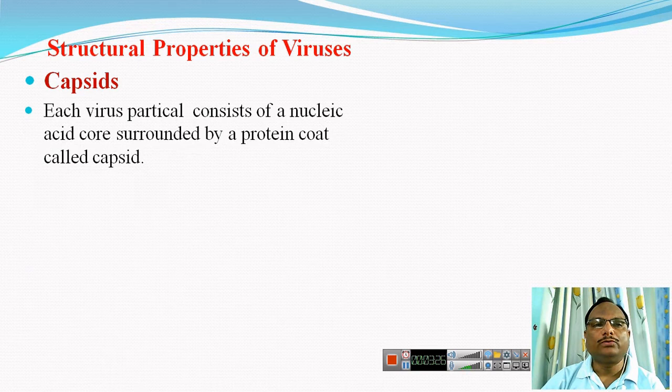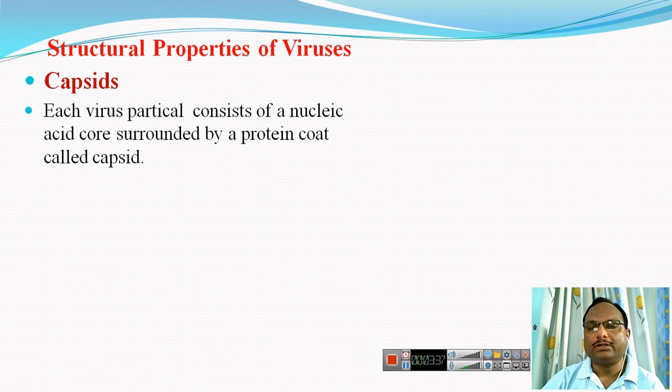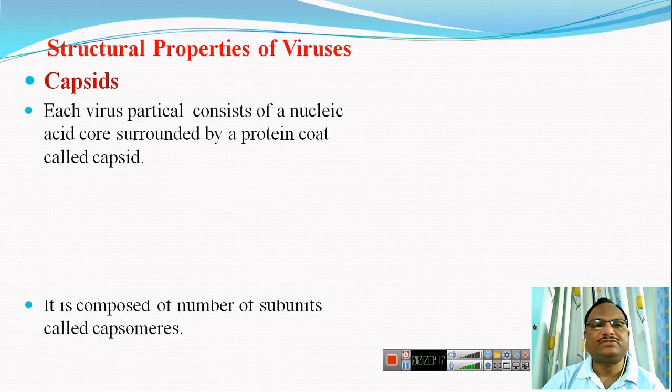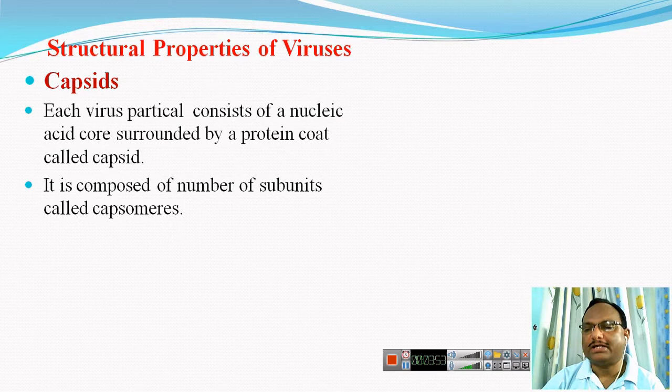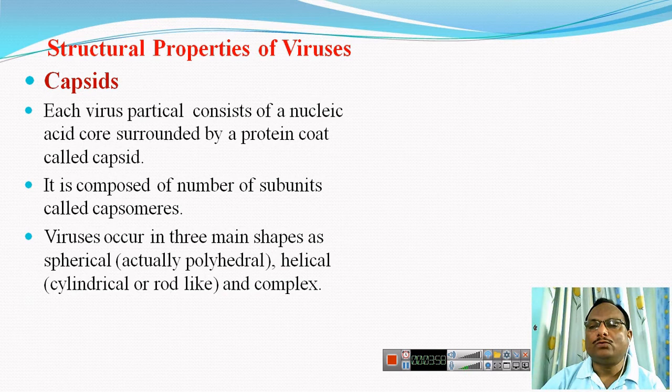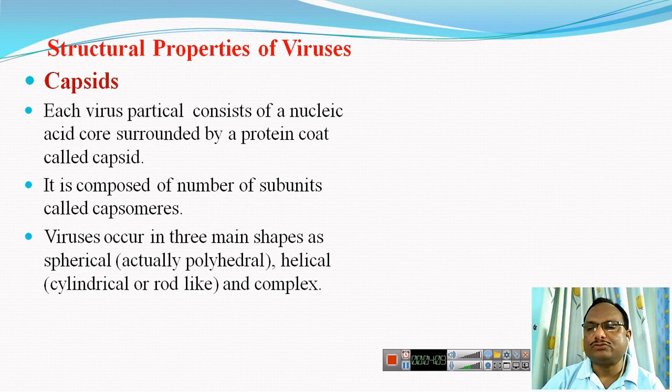Each virus particle consists of a central nucleic acid core, and that central nucleic acid core is in turn surrounded by a protein coat called the capsid — a proteinaceous component surrounding the genetic material of the viruses. This capsid is made up of subunits of proteins, and those subunits are called capsomeres. The arrangement of these capsomeres within the capsid is specific, and that specific arrangement is responsible for giving three different shapes to the viruses.